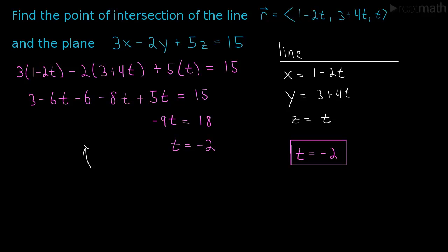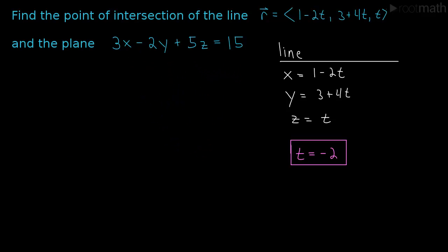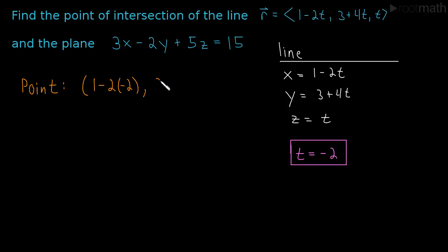So the point we're looking for is found by plugging t equals minus 2 into the line equations. The x-coordinate is 1 minus 2 times minus 2, the y-coordinate is 3 plus 4 times minus 2, and the z-coordinate is just minus 2. This gives us the point (5, -5, -2).